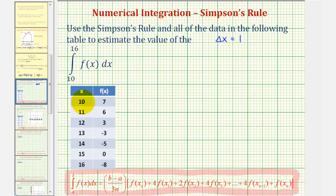Also, the starting x value of 10 would be x sub zero, x sub one would be 11, x sub two would be 12, and so on.